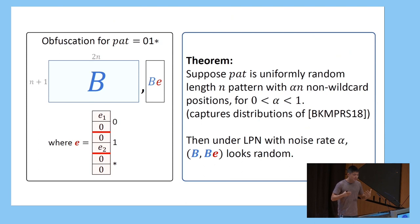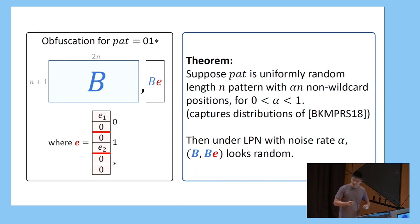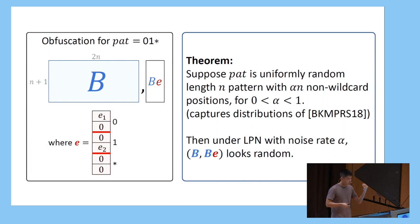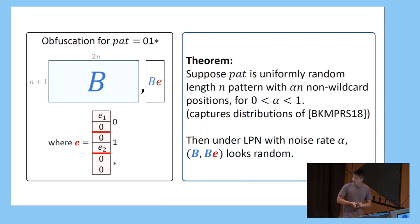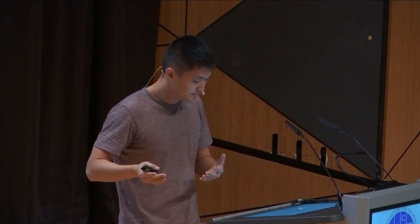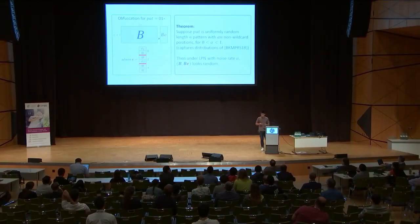For security, we're talking about distributional security, so we fix a distribution from the prior work of BKMPRS. To sample a pattern of length n: pick alpha·n uniformly random positions and sample uniformly random 0/1 bits there; put wildcards everywhere else. The theorem states that if you sample the pattern from this distribution, encode it in E, and give out B and B·E, then under the standard learning parity with noise assumption with constant noise rate alpha, this obfuscation B, B·E looks uniformly random and hides all information about the underlying pattern.